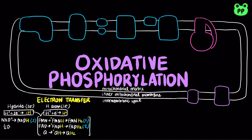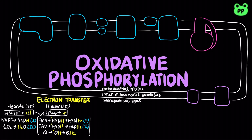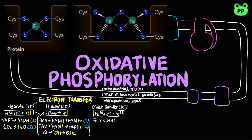Oxygen atoms typically accept two electrons as a hydride, but can occasionally accept one electron, resulting in the formation of reactive oxygen species such as superoxide anion and hydroxyl radical. Finally, the third type of electron transfer occurs directly through the reduction of iron 3+ to iron 2+, which occurs in iron-sulfur centers.